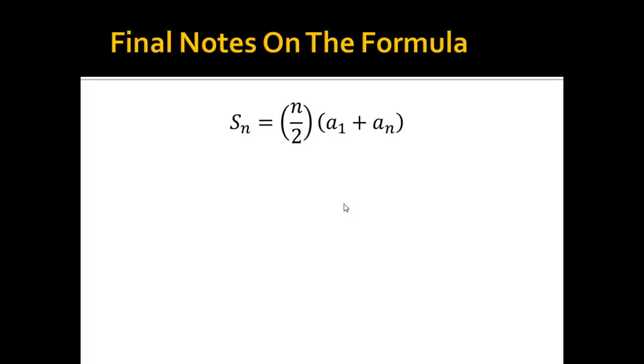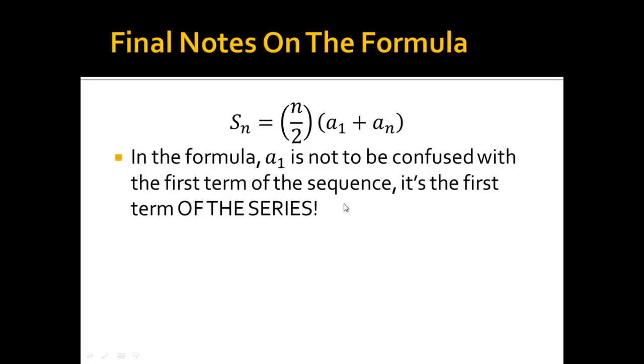All right, so, some final notes on the formula. A sub one is not to be confused with the first term of the sequence. Okay, it's not like we're finding the rule here. It's the first term of the series. Okay, so, it's the first thing I start adding from. Like, in the example that we had, a sub one was not the first term of the sequence. Hence, a sub one was actually the eleventh term in the sequence, which was one hundred and sixty-two.